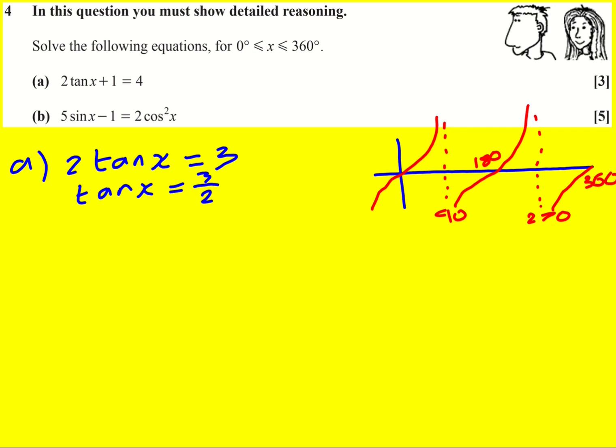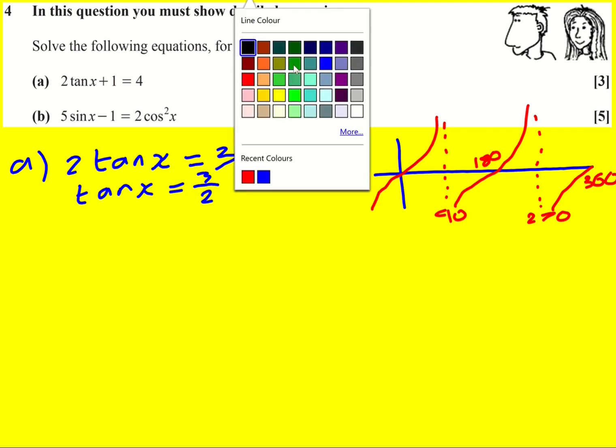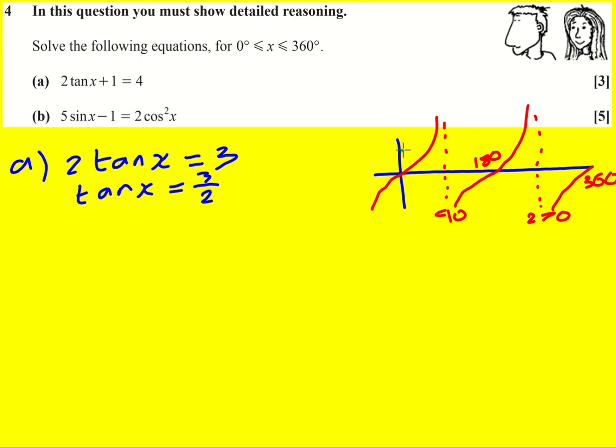I like to use graphs to solve these equations. You might use CAST diagrams but I'm going with the graph. I'm not even going to talk about CAST diagrams. Right, 3 over 2 - I can see there's two solutions and I can use the symmetry of the graph to get them.